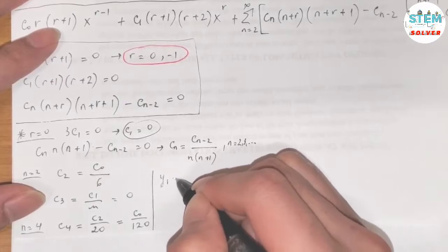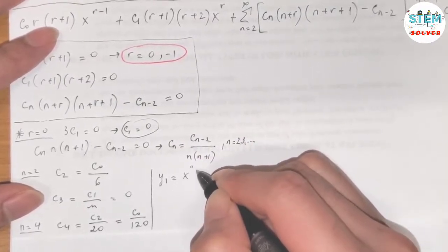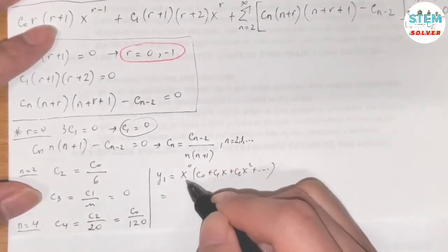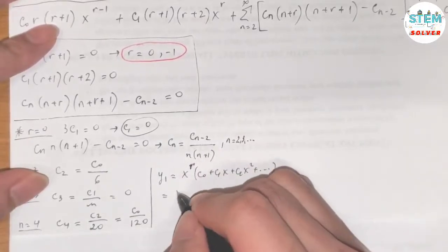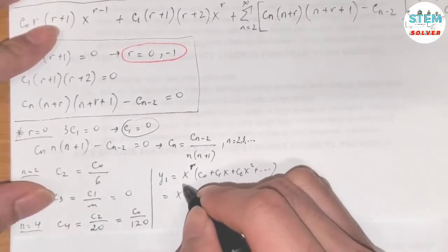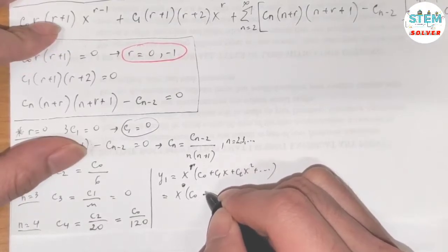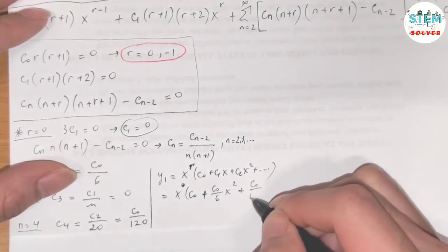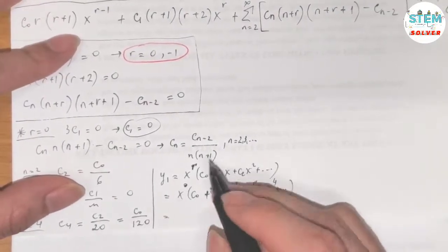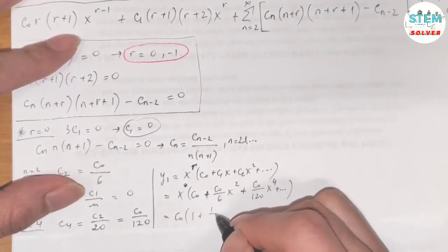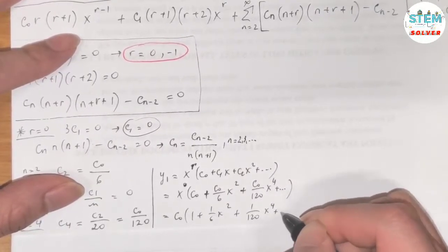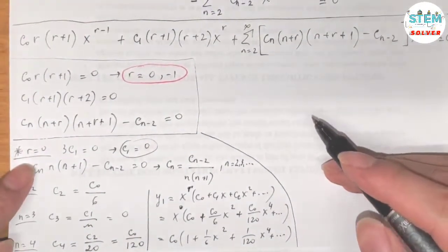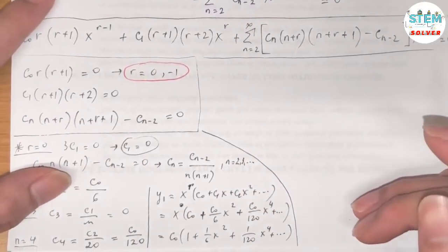Write the first solution: y_1 equals x to the r times [c_0 + c_1 x + c_2 x^2 + ...]. With r=0, x^0=1, and substituting: c_1=0, c_2=c_0/6, c_3=0, c_4=c_0/120. Factor out c_0 to get y_1 = c_0 [1 + (1/6)x^2 + (1/120)x^4 + ...].